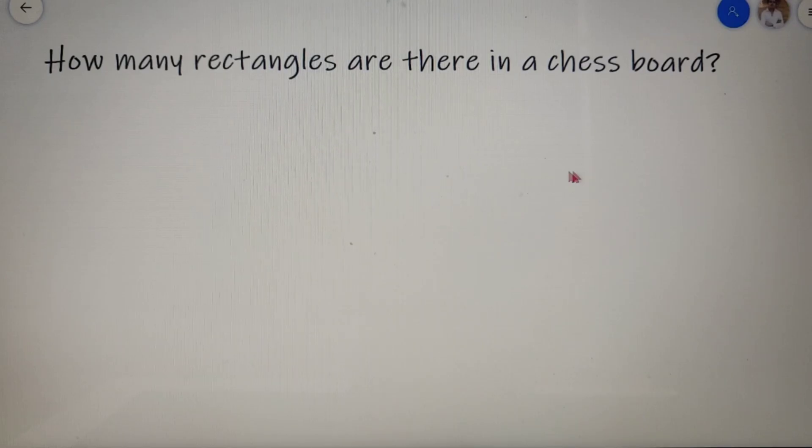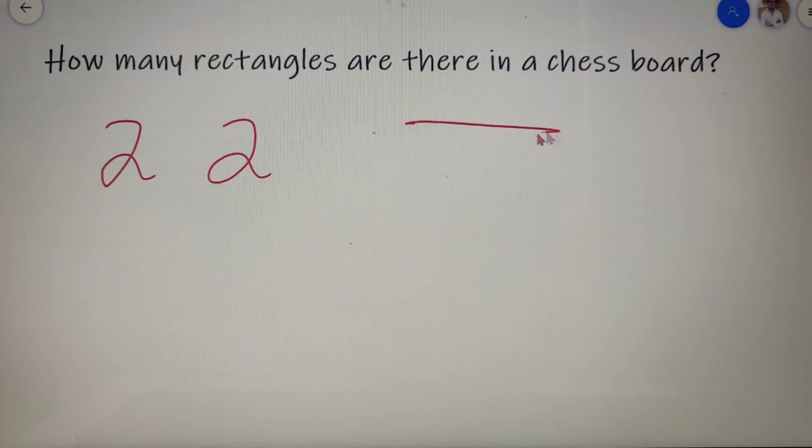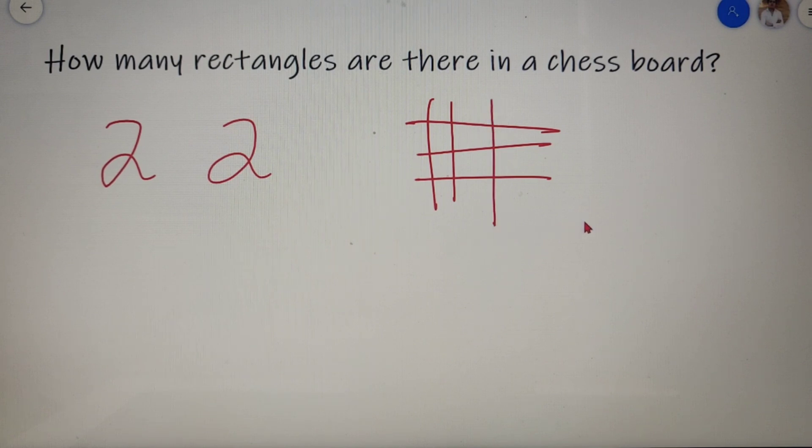Now moving on to our second question. It says that how many rectangles are there in a chess board. Now before solving this question let me tell you what should be our approach for solving questions like these. A rectangle is formed by two horizontal lines and two vertical lines. So if we are given that there are m horizontal lines and n vertical lines, then the total number of rectangles that can be formed will be equal to mC2 into nC2.